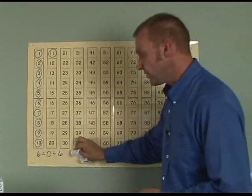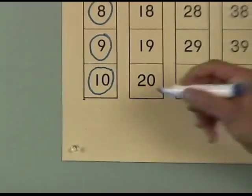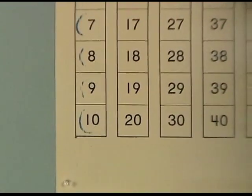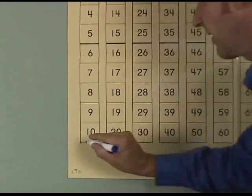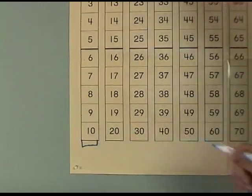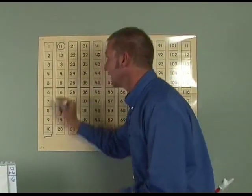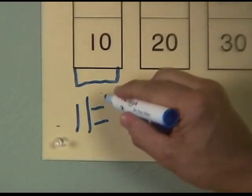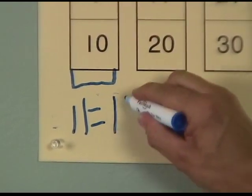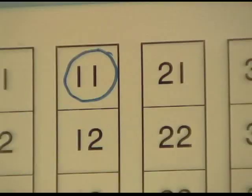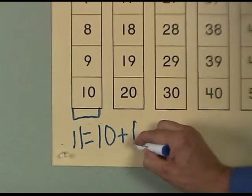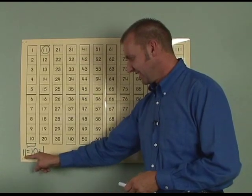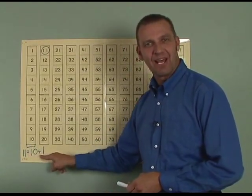5. Okay, I made a new 10. So down here, I made a new 10. So I will erase all of those circles and I will put a bracket down here. Now my total is 11. I write that as 11 equals 10 plus 1. Can you say that with me, boys and girls? 11 equals 10 plus 1. Very good.